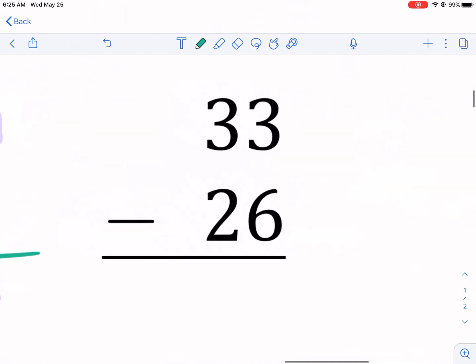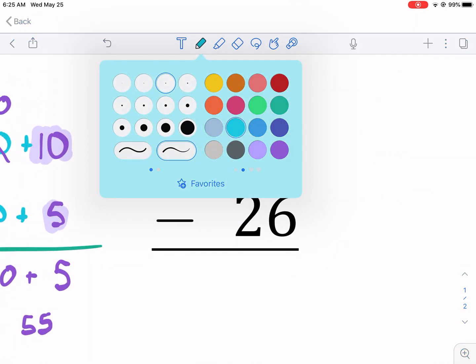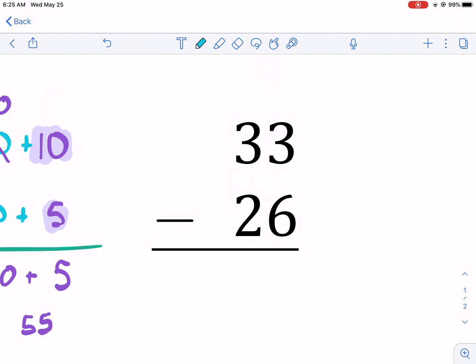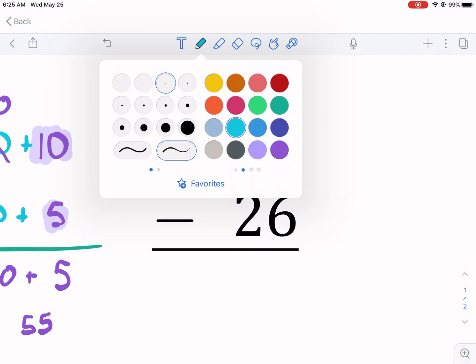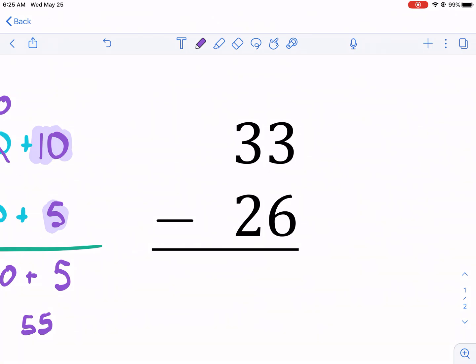I'll do one more with the different colors. And then maybe I'll jump around, maybe do two more, and then you guys can leave a comment if you need any more help. So ones place, guess what? Can't do 3 minus 6.